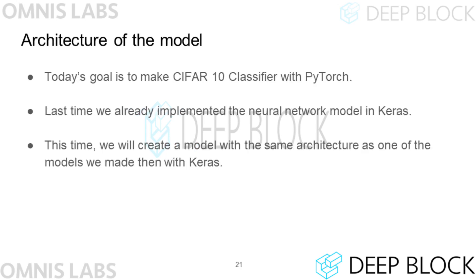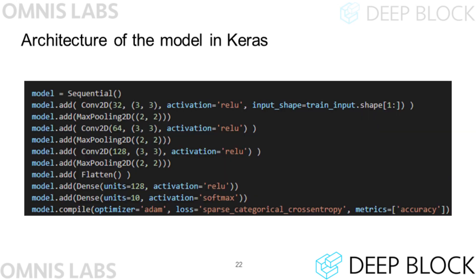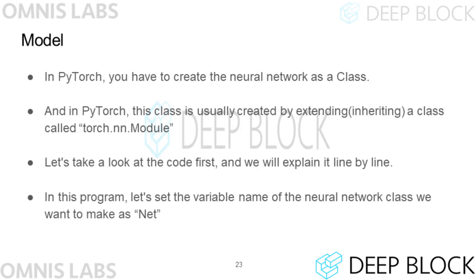Today, we will build a neural network to classify CIFAR-10 images with PyTorch, and we plan to make the same neural network we designed with Keras in lecture 9 with PyTorch this time. Now, let's see how to implement this neural network in PyTorch. In PyTorch, you need to create the neural network as a class.